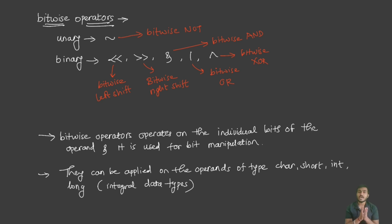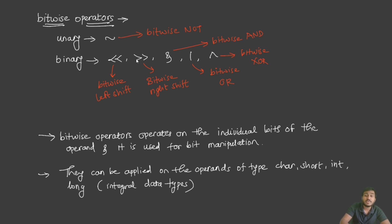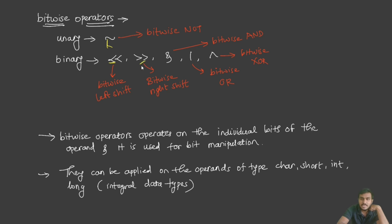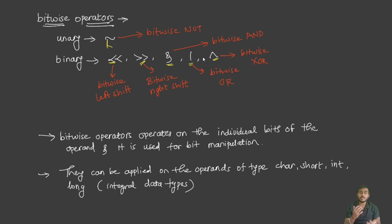If we categorize bitwise operators depending on how many operands they need, we can categorize them into unary and binary bitwise operators. In the unary category, we have a single operator: bitwise NOT. In the binary bitwise category, we have multiple operators: bitwise left shift, bitwise right shift, bitwise AND, bitwise OR, and bitwise XOR. So in total we have six bitwise operators — one unary and five binary. There is no ternary bitwise operator.